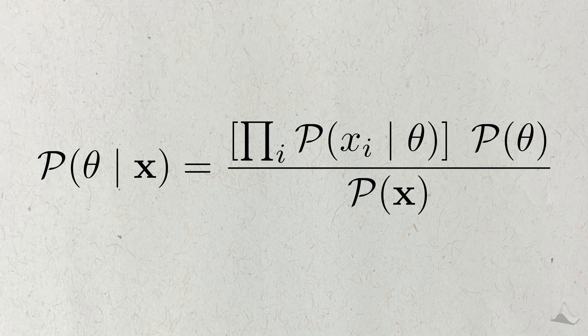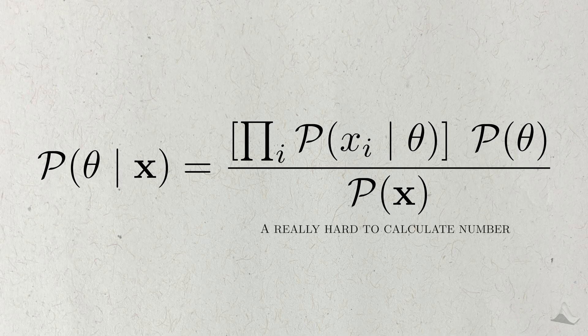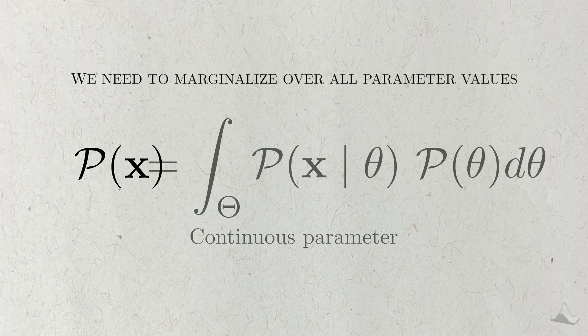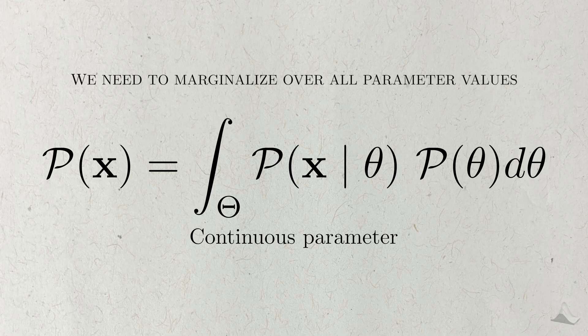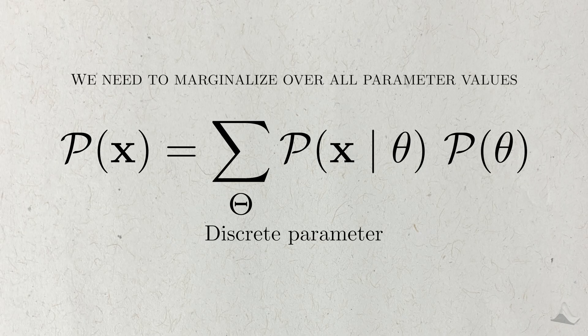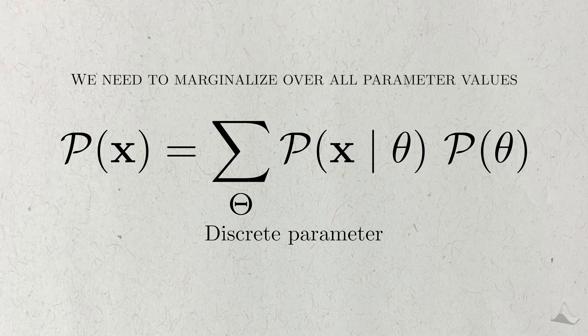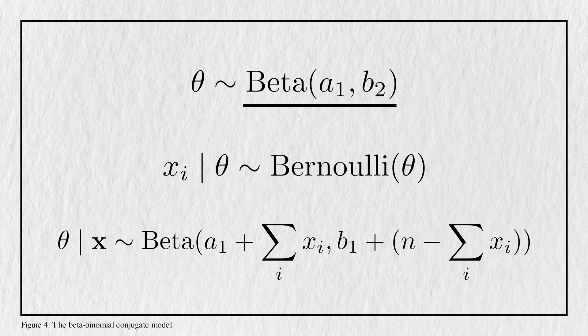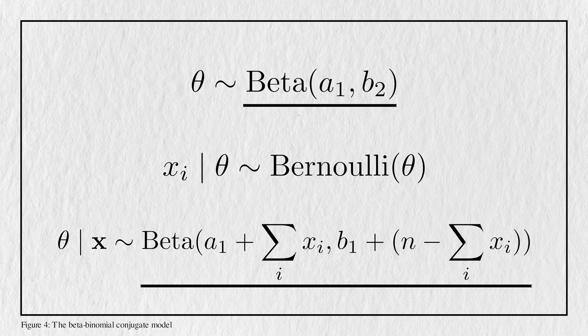The likelihood and prior are relatively easy to calculate once we pick a distribution for the data and the parameter. But the denominator is different. Since the data is observed, this probability is actually just a number, just a very hard to calculate number. The reason for this is because this probability needs to marginalize the likelihood over all parameter values. This means either taking an integral or a sum over all, possibly infinite, parameter values. And in general, this is almost impossible to do. In the past, we've usually avoided this problem with conjugate families. A conjugate prior is a prior that results in a posterior distribution that comes from the same family, just with updated parameter values. But that's not what I want to do in this video.